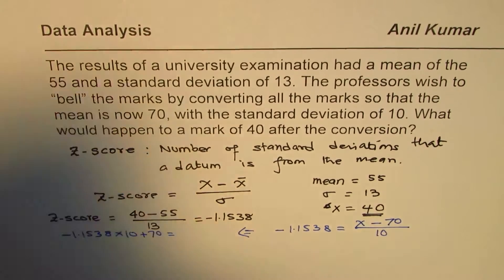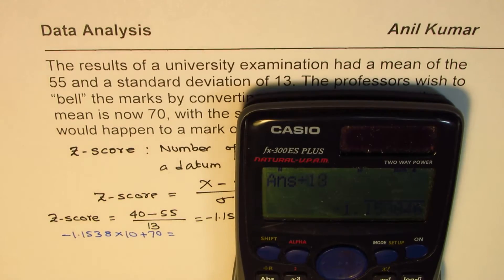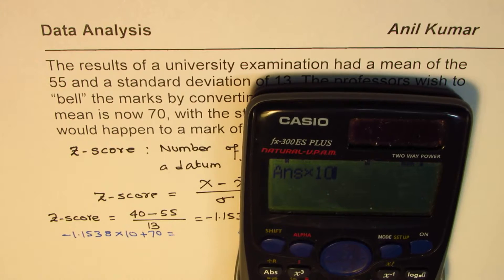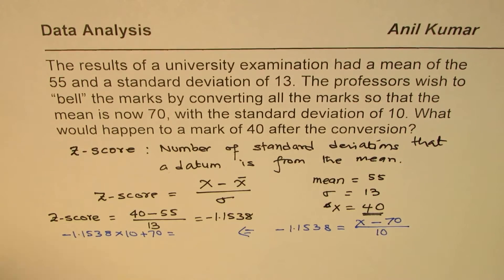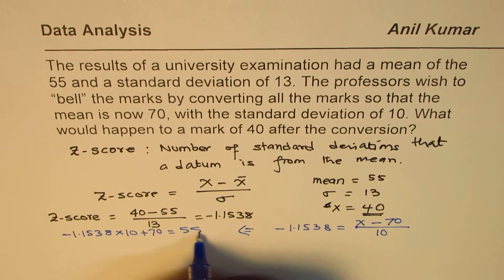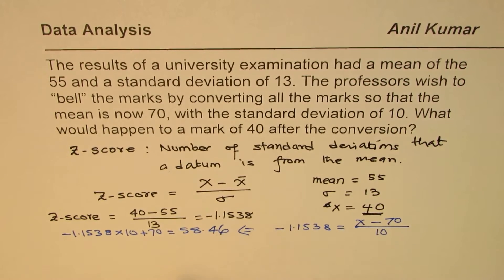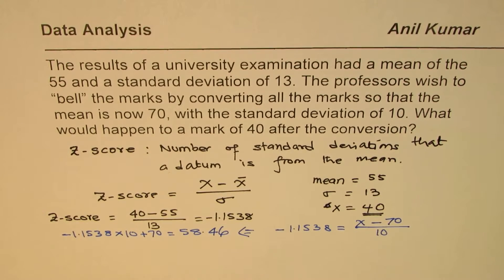That is the answer. So let's do it. We'll multiply this value by 10 and then we are going to add 70 to it. So that gives us a value of 58.46.